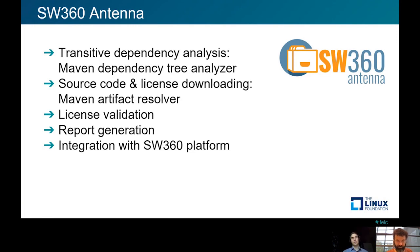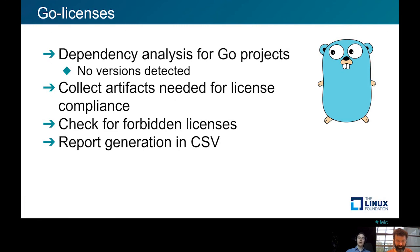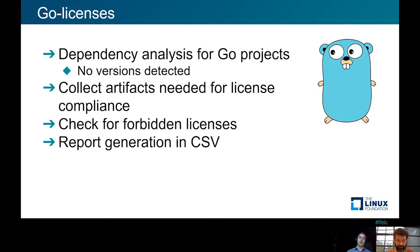The last tool we looked at was Go Licenses, developed by Google, which detects dependencies for Go projects. One downside we noticed is that it doesn't detect versions. However, it has a feature to collect all artifacts needed for license compliance — it figures out licenses for all dependencies and then collects license texts, copyright notices, and even source code for licenses that require it, all into a single folder. It can also check for forbidden licenses according to Google's license classifier and generate CSV reports.